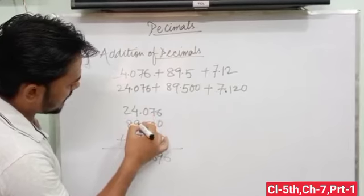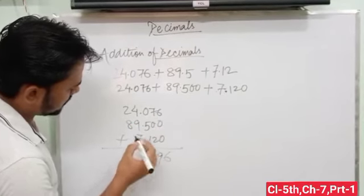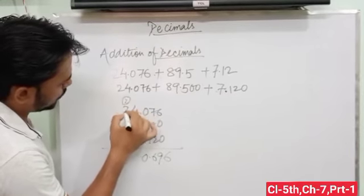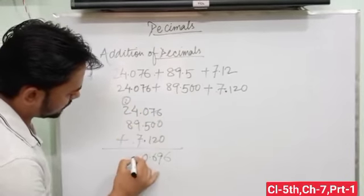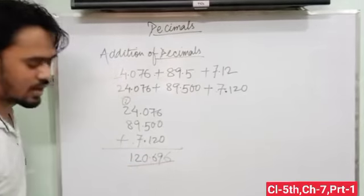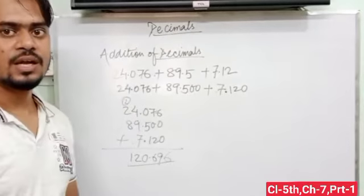4 plus 9 plus 7 is 20. Then I have 2. Then 2 plus 2 plus 4 - 4 and 8 - 12. 180.696. This is our result.